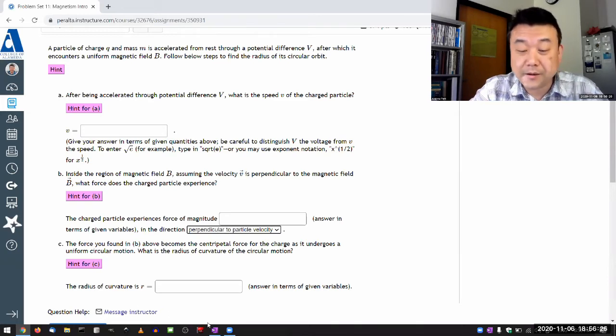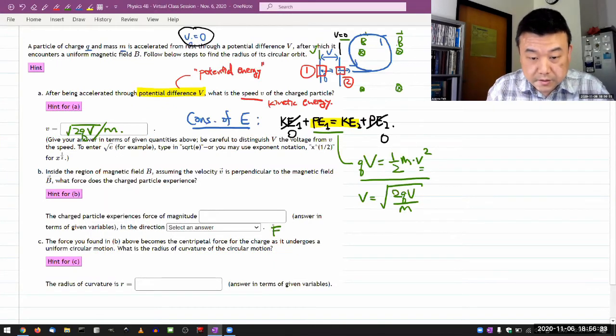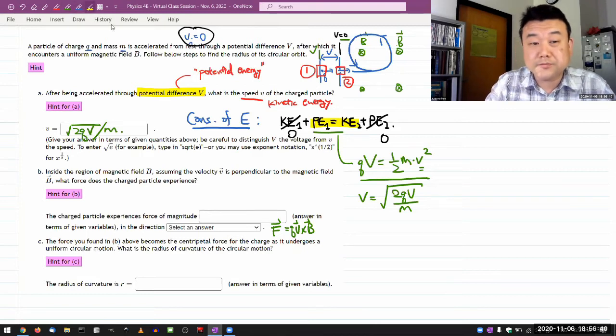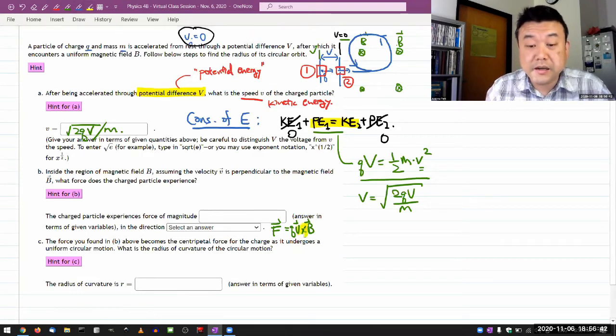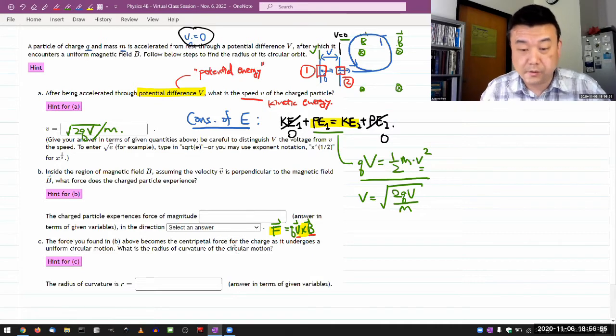So the options, it should just be perpendicular to particle velocity. That simply comes from the fact that the force is qv cross B. This is the property of cross product really, it's deliberately defined such that this vector here is guaranteed to be perpendicular to v and perpendicular to B. So it should be perpendicular, like always as a matter of property of the force.